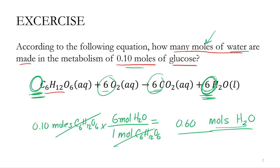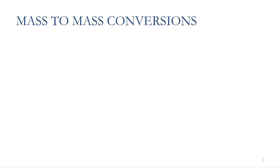Additional things we might have to do in stoichiometric calculations is determine the mass of these compounds. In the laboratory, I'm not going to be able to measure moles of a substance — I'm going to be able to measure the mass or the volume. So a lot of times we also need to do mass-to-mass conversions in stoichiometry.